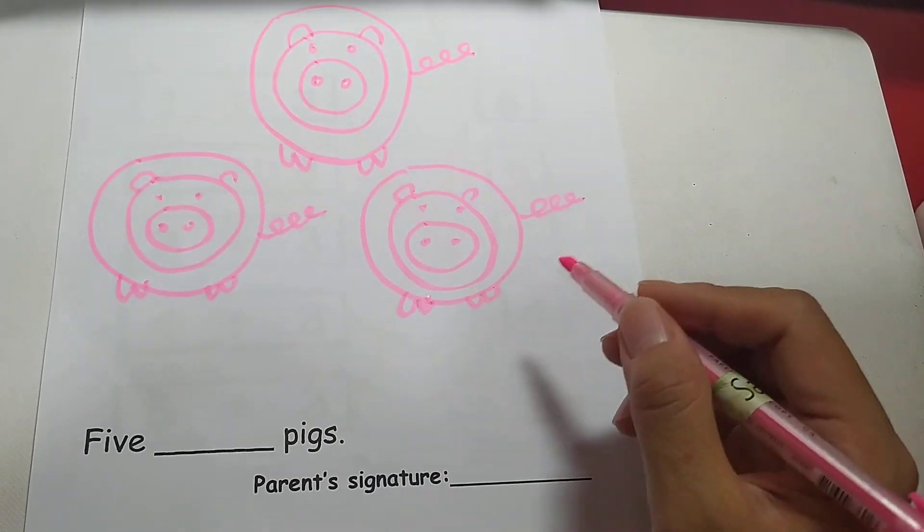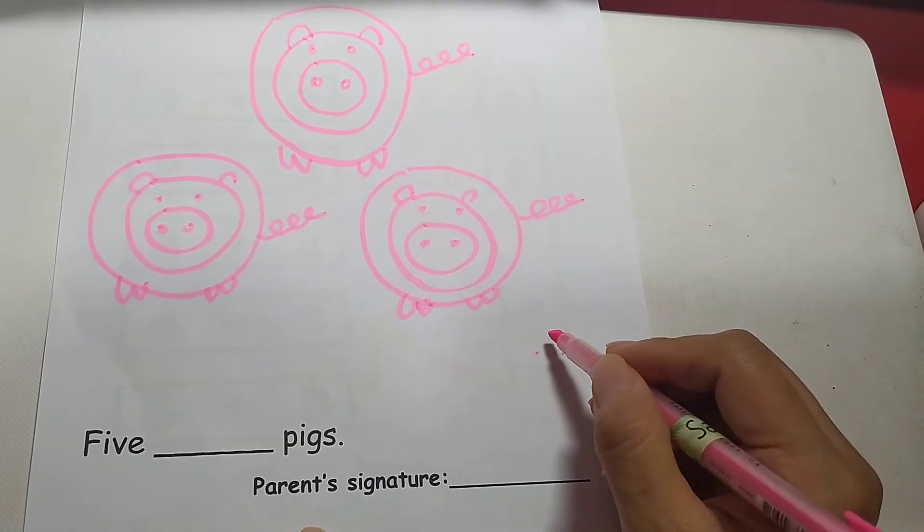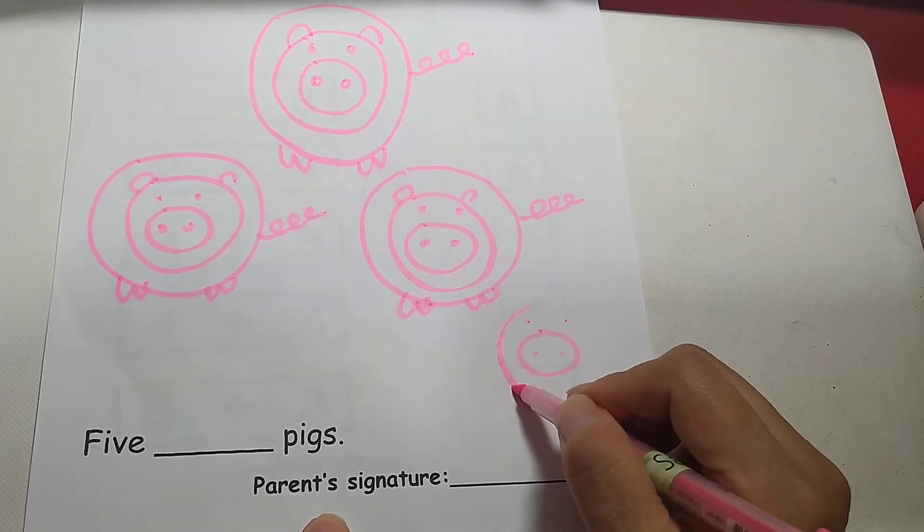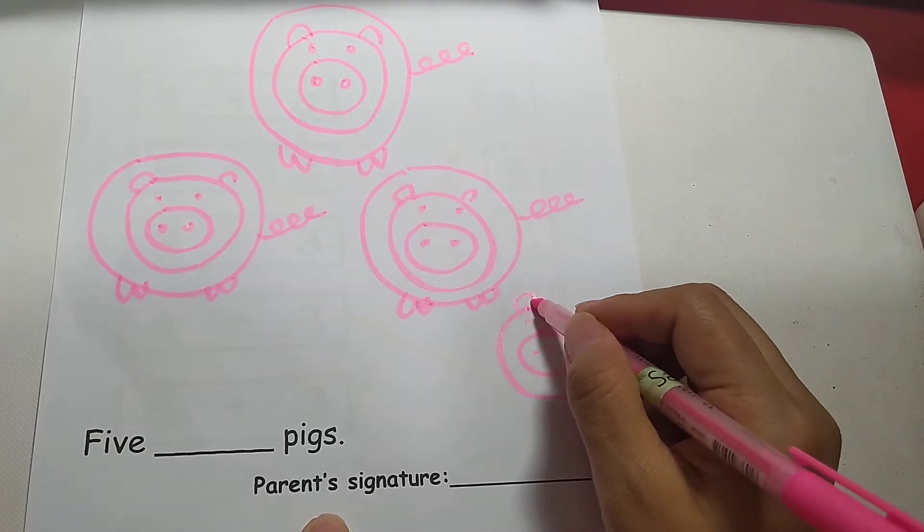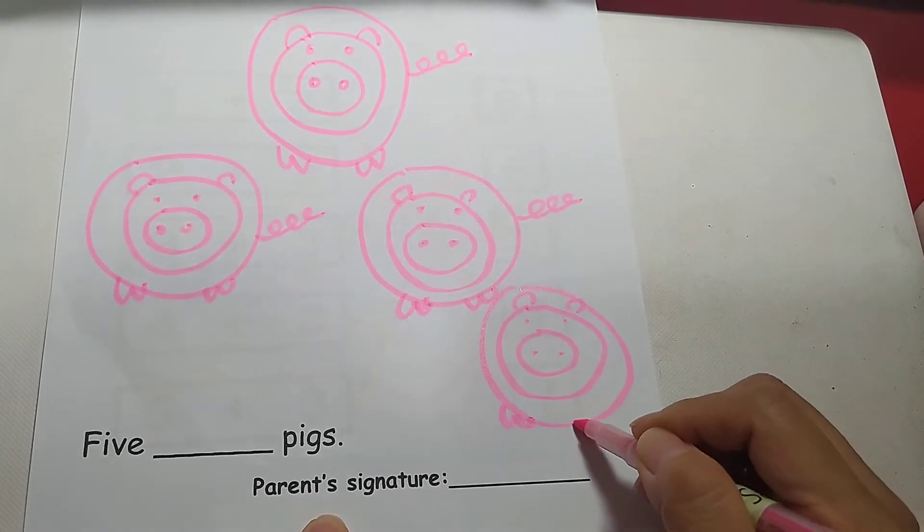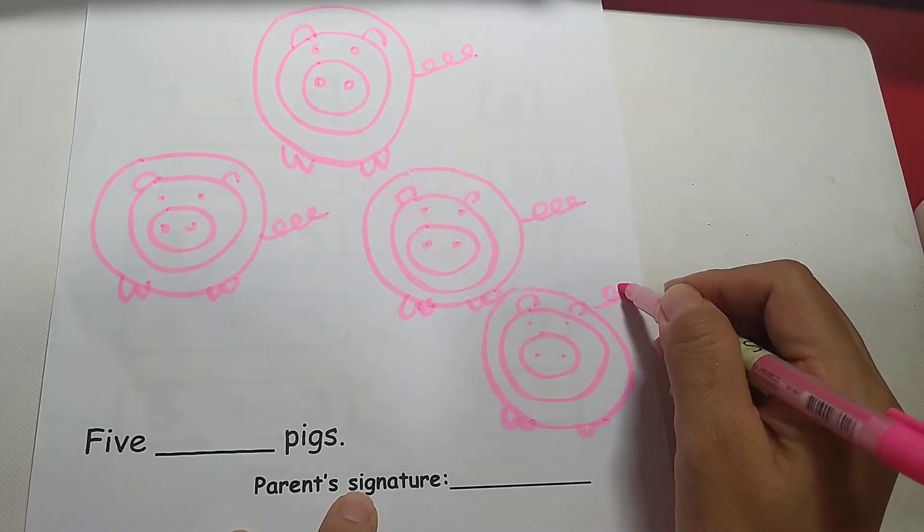One more time. Little circle, little circle, big circle. Little circle, little circle, big circle. Half circle, half circle, big circle. W, W, E, E.